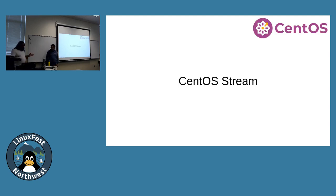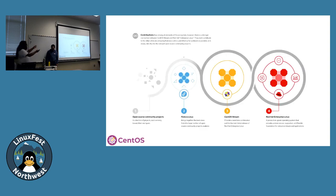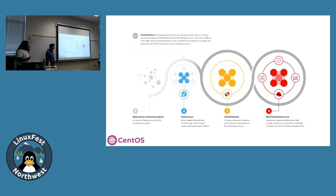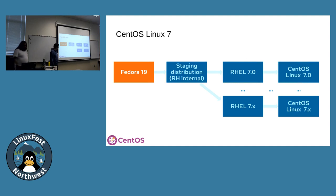Starting with CentOS Stream. This chart helpfully shows a view of how the integration pipeline from open source projects made by people on the internet comes down to eventually becoming something that may exist in Red Hat Enterprise Linux. We're mostly focusing on CentOS Stream here. That's the picture of where we are now, but that's not how it always was. Let's look back at how things looked when CentOS Linux 7 was a thing.